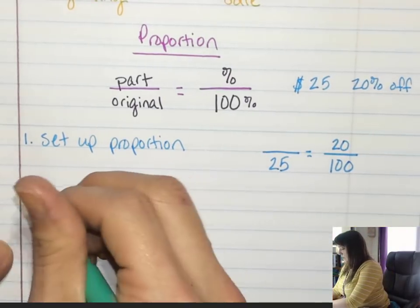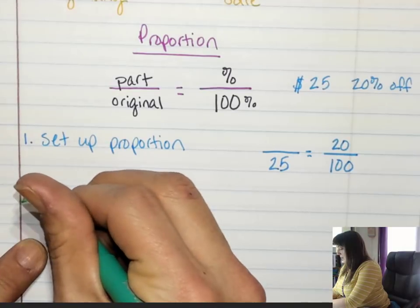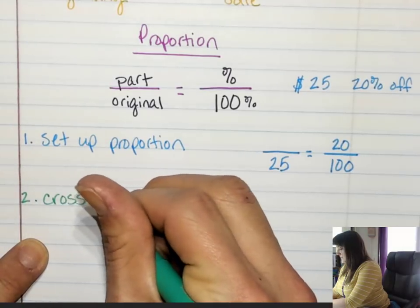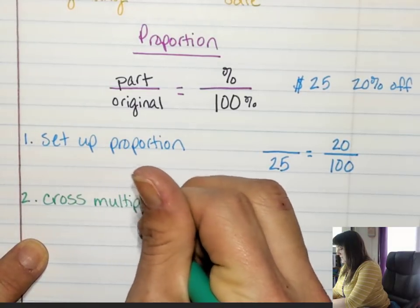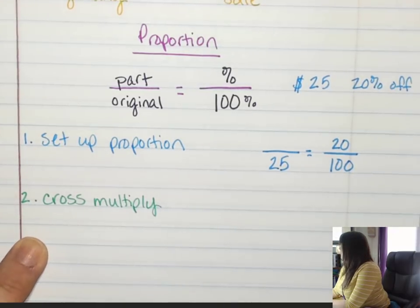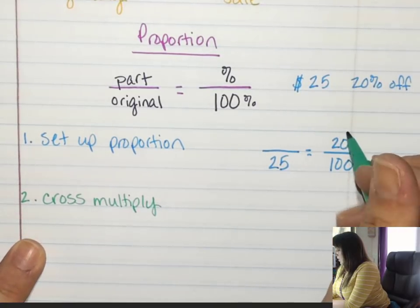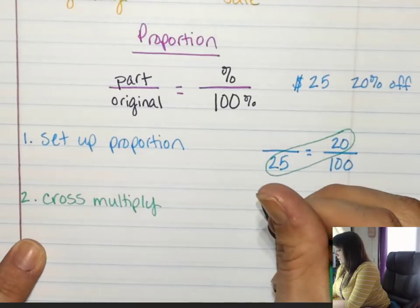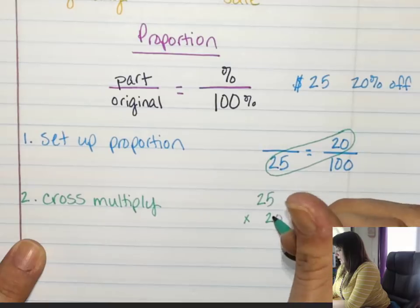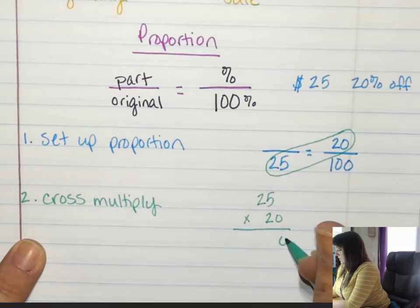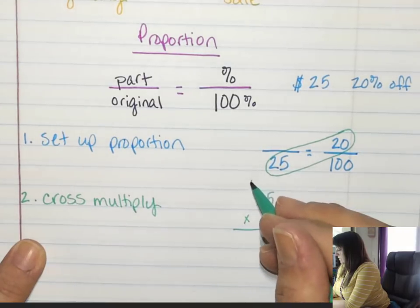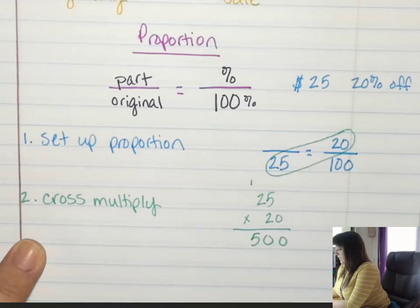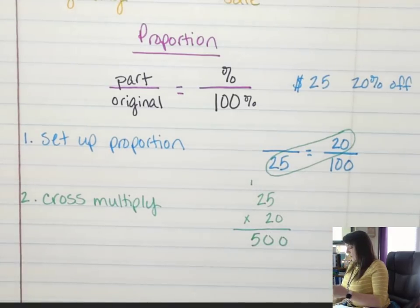Step two: I'm going to cross multiply. So here I do 20 times 25. 25 times 20: 0, 0, 1, 500. And then what's the next thing I do after cross multiply?